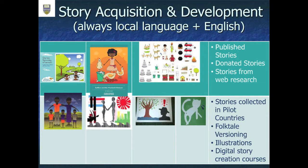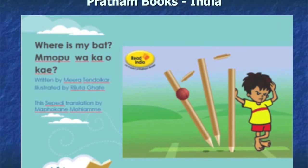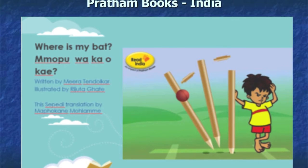You can see the multiplier effect of the digital and what you can do once you have open access and people can translate and adapt stories. I would think you'd probably agree that 500 stories should be able to develop literacy for a child in whatever language they might be learning. We have stories from many different sources — published stories, donated stories, stories from web research, stories collected in pilot countries. We also have partners such as Pratham Books. At UBC, we're very interested in relationships with India and with China.